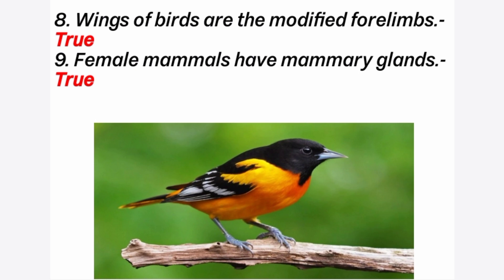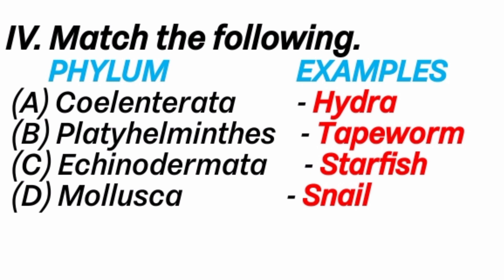Ninth question: female mammals have mammary glands — answer is true. Fourth part — match the following. Here are the phyla and their examples: A. Coelenterata — example: Hydra. B. Platyhelminthes — example: tapeworm; tapeworm is endoparasitic and mostly lives inside the small intestine. C. Echinodermata — answer: starfish. D. Mollusca — answer: snail. Thank you viewers for watching this video. Please subscribe to this channel.